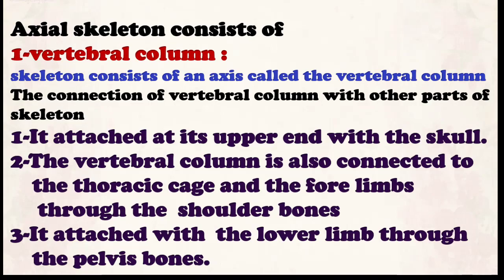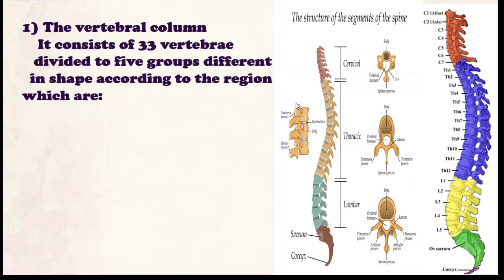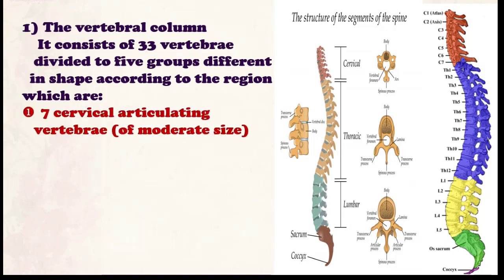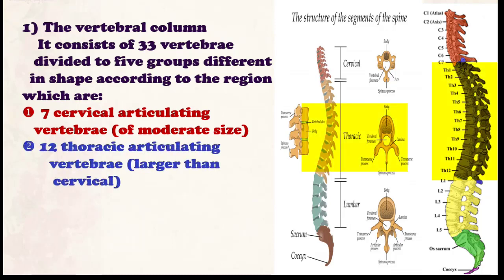The vertebral column consists of 33 vertebrae, divided into five groups according to shape and region. Number one: seven cervical articulating vertebrae of moderate size, existing in the neck region. They are called cervical articulating vertebrae because 'articulating' means they can move left or right.